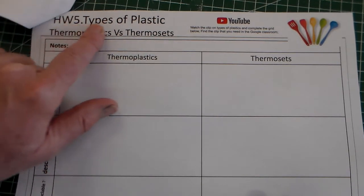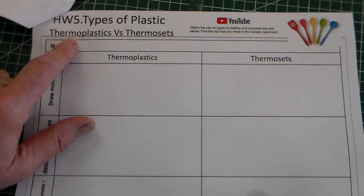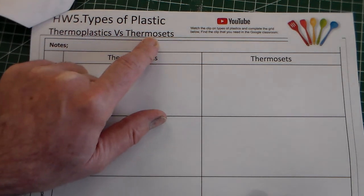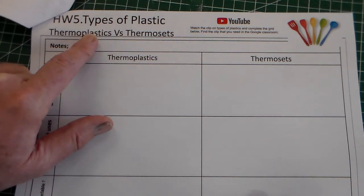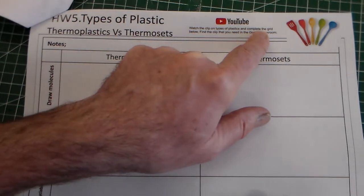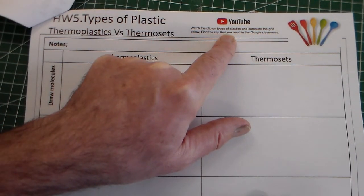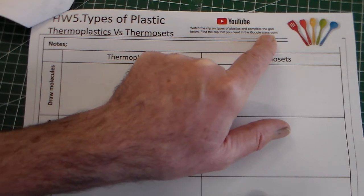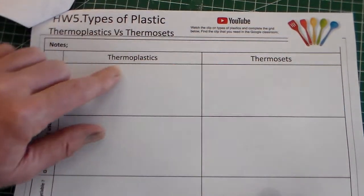We're looking at homework 5 types of plastics thermoplastics versus thermosets. For this homework, homework 5, you need to watch the clip on plastics and complete the grid below. The clip that you need is in the Google classroom. So it's using the same clip.